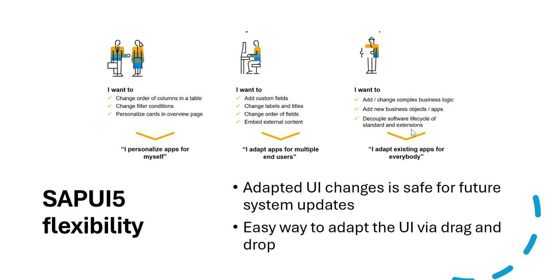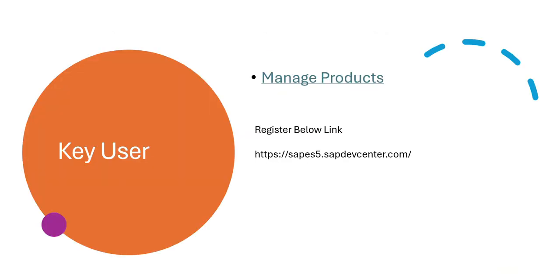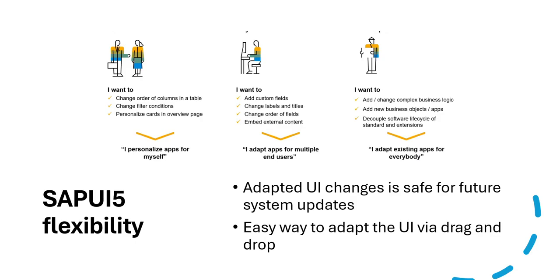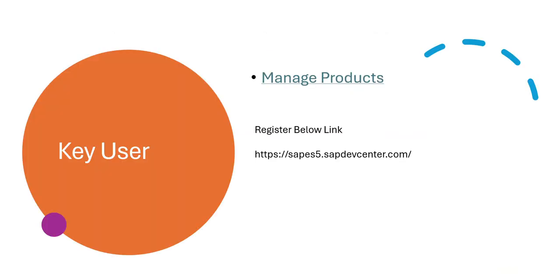In the developer section, you handle complex logic — creating extra pages, performing actions, or extending from one point to another for complex operations. These things require a developer to extend the application. For key users and end users doing Adapt UI changes, I will provide a public link in the description so you can register and practice your Adapt UI changes.